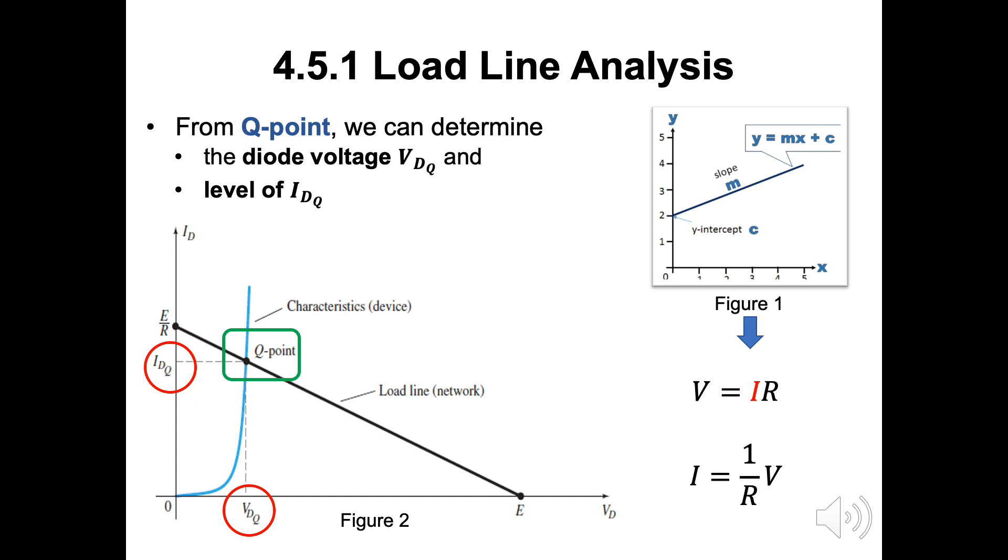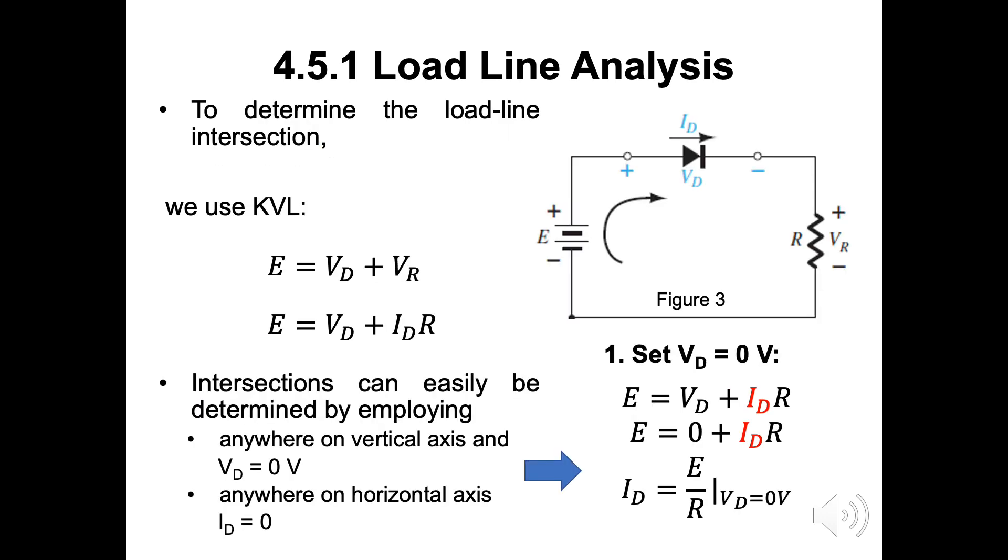However, in load-line analysis, apart from finding this intersect point, we also need to find the place where the load-line intersect with the characteristic of device. The intersect point here are IDQ and VDQ or we can call them as Q-point. Now, we will use a simple network, or a circuit which is a load in figure 3. We have source as E, VD as the diode and R as the resistor. In last slide we talked about two types of intersection.